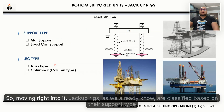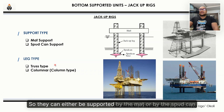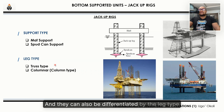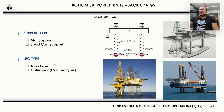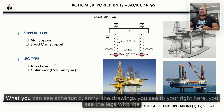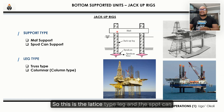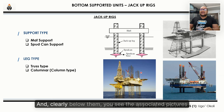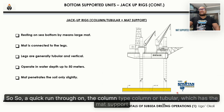Jack-up rigs are classified based on their support type — they can either be supported by the mat or by the spud can — and they can also be differentiated by leg type. One is called the truss type or lattice type, and the second is the column type. In the drawings to the right, you can see the lattice-type legs with spud cans, and the column legs with the mat.